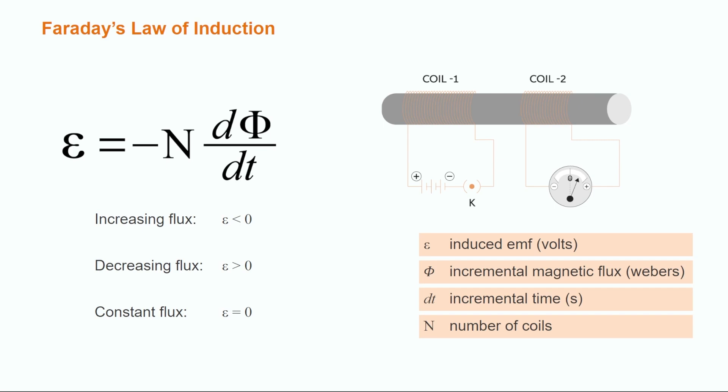Mathematically, we can say that the induced EMF due to a changing magnetic flux is the negative of the rate of change of the magnetic flux over time multiplied by the number of coils. This is expressed as negative N d phi dt, and the negative sign is needed to provide the correct direction for the induced current.